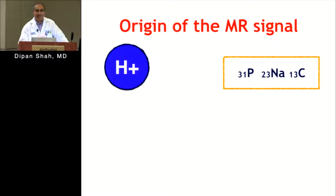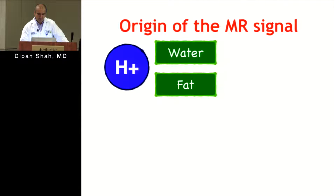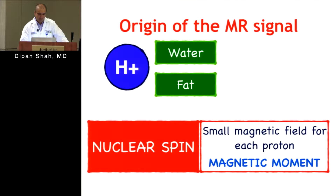Now let's talk about the origins of the MR signal. Hydrogen is the main species we utilize, but you can also do imaging with phosphorus, sodium, and carbon — all have magnetic properties and will emit a magnetic signal. The advantage of hydrogen is that it's abundant in water, and there's also a large amount of hydrogen in fat. This concept of nuclear spins describes how these hydrogen protons spin around at a certain rate.